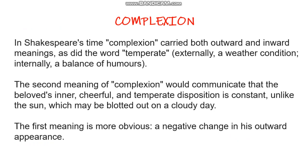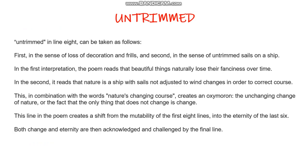The first meaning is more obvious: a negative change in the sun's outward appearance. Another word used is 'untrimmed,' which also has two meanings. First, the sense of loss of decoration and frills; and second, in the sense of untrimmed sails on a ship. In the first interpretation, the poem reads: beautiful things naturally lose their fanciness over time. In the second, it reads: nature is a ship with sails not adjusted to wind changes in order to correct course. This, in combination with the words 'nature's changing course,' creates an image of the unchanging chains of nature — the fact that the only thing that does not change is change. This line creates a shift from the mutability of the first eight lines into the eternity of the last six lines.